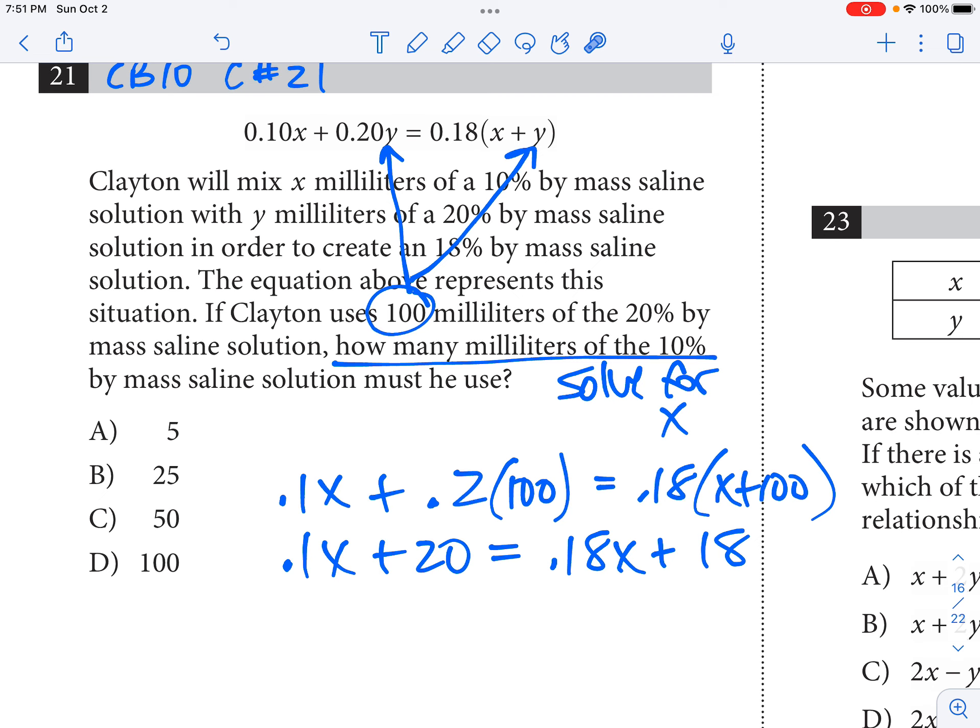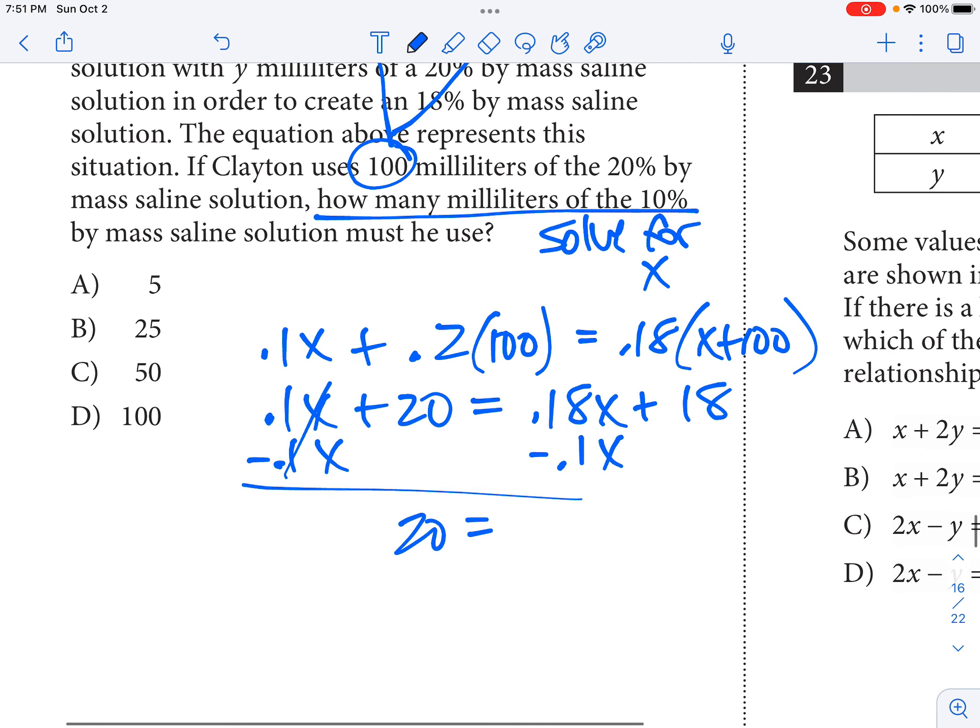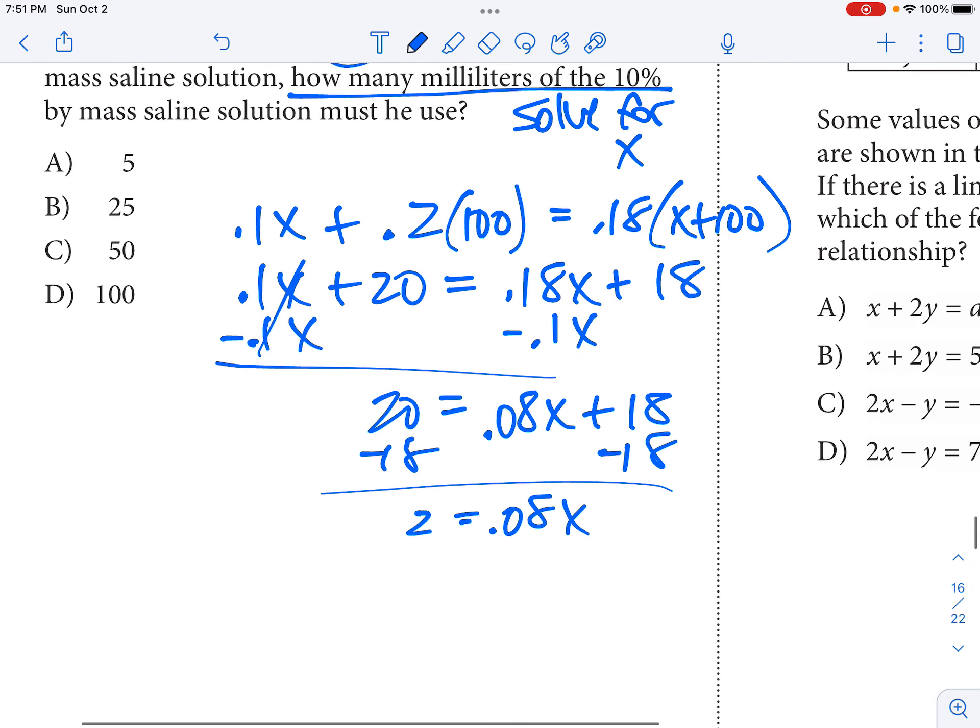Now I just need to combine like terms. I think I'll subtract the 0.1X over. And that's going to give me 20 equals, let's see, 0.08X plus 18. Subtract 18 over. And you will have a calculator, so we're just dividing both sides by 0.08. And we end up with X equals 25.